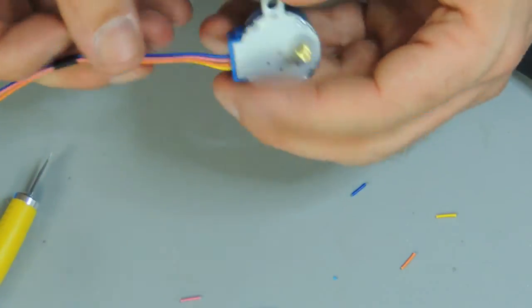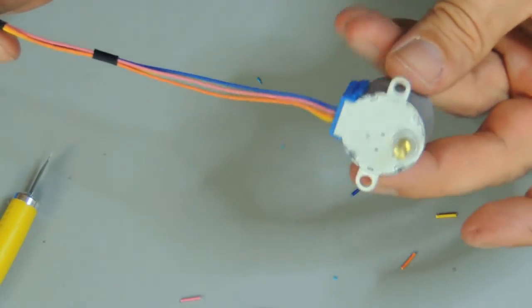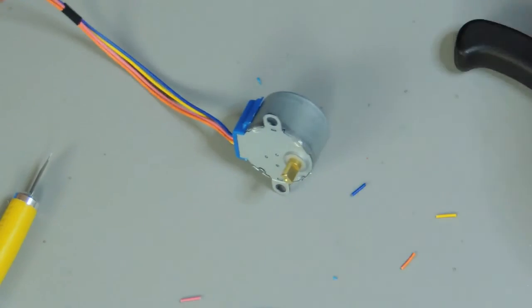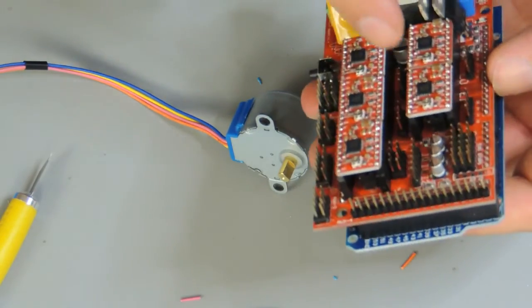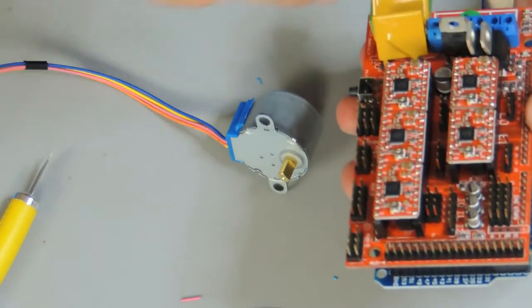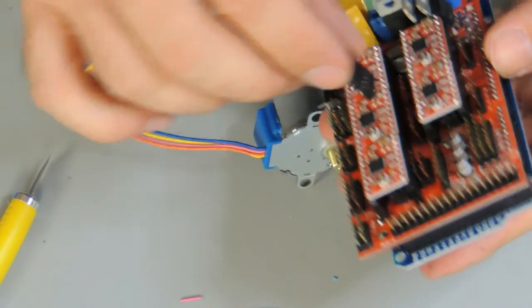And this is all you need to do to convert it from unipolar to bipolar and to get them connected to the RAMPS board. Now it's just the same like the NEMA motors. Just take a look on your RAMPS and depending on which axis or extruder you want to connect, you put it in on the right position.